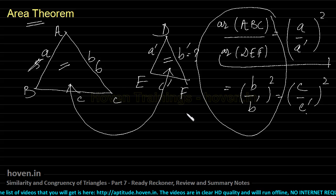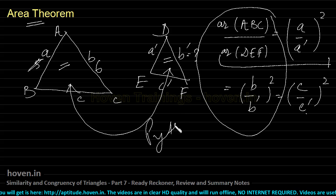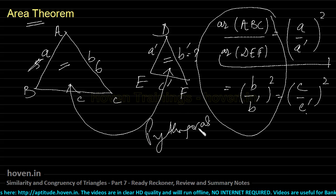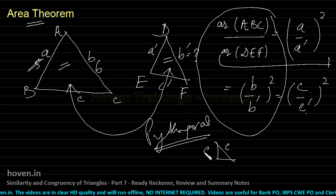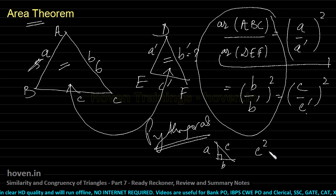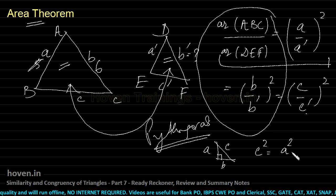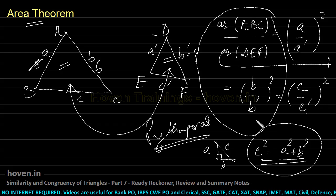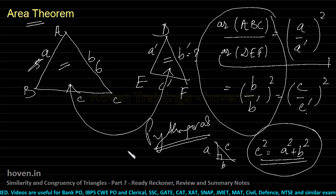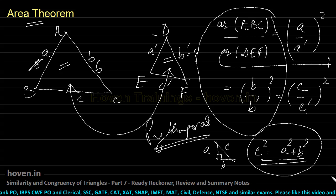The last important theorem is the Pythagoras Theorem. It says that if C, A, and B are the sides of a right-angled triangle, then C² = A² + B². This covers all the key theorems for congruency and similarity of triangles. Thank you.